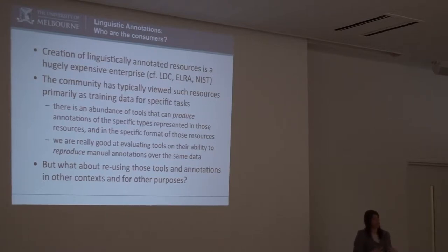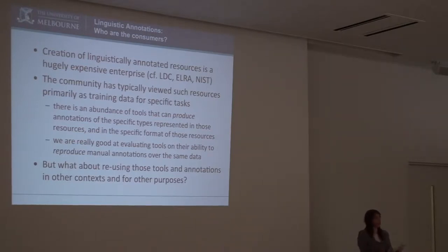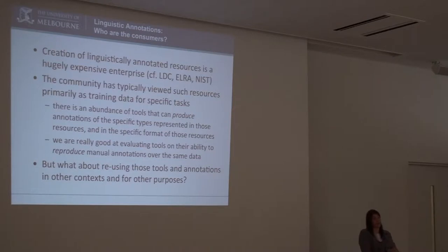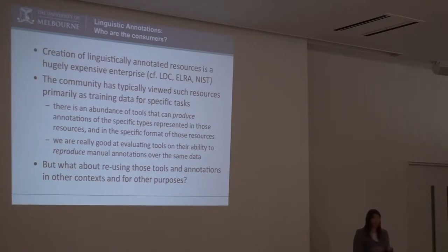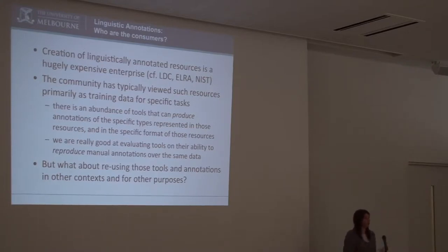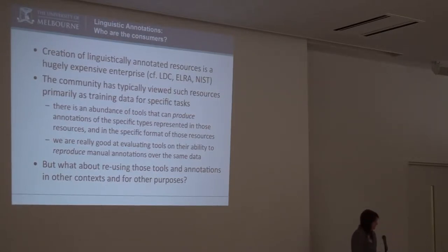But we've primarily thought of them as a way to assess our ability to reproduce those annotations using automatic tools. They were developed for the purpose of driving research in natural language processing. And so there is an abundance of tools that can produce annotations that match the kinds of annotations we've been manually annotating over linguistic resources. And we've become really, really good at evaluating tools on their ability to do that reproduction — every paper you read basically has a gold standard annotation that they compare with, and they count precision, recall, F-score across those things.